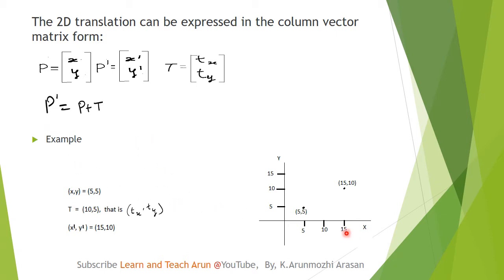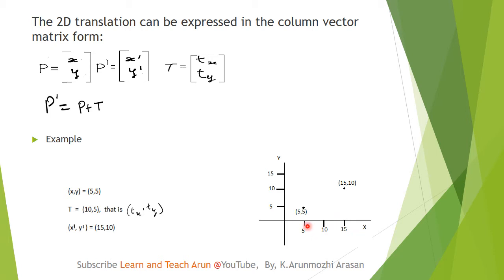Here is one example. In the example, we have one single coordinate point. The original position is 5, 5. The translation distance is tx, ty equals 10, 5 — so tx value is 10 and ty value is 5. So x dash equals x plus tx: 5 plus 10 equals 15. Y dash equals y plus ty: 5 plus 5 equals 10. So the translated position is 15, 10.